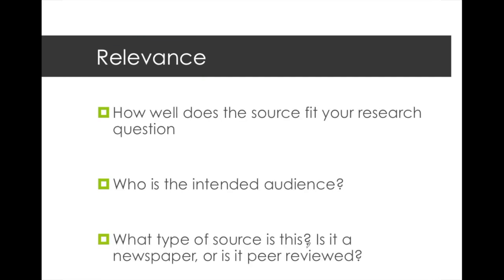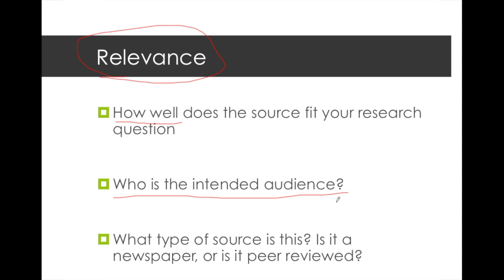The R in CRAP stands for relevance. Relevance is how well the website you're looking at fits into your research question. You're going to want to look to see who the intended audience is for the website. Think about your paper on the immigration debate — is the source from a newspaper or an academic journal? You want to think about what's best for your paper.